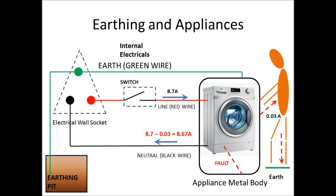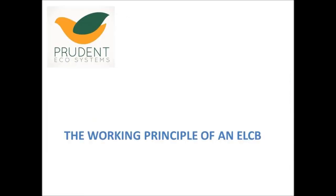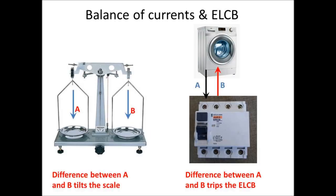The reason is that if there is a difference in current between line and neutral, then it is likely that a person is getting a shock, and hence tripping the circuit is necessary for safety. The ELCB is designed to trip at a leakage value of 30 milliamps or 0.03 amperes, because beyond this it can be dangerous for humans. It is important to note that the ELCB is not checking the absolute value of current in the line — that is 8.7 amps in this example — hence quite often even a very low power appliance having a leakage could cause an ELCB to trip the power to the entire house. The working of an ELCB is easier understood with the analogy of a precision physical balance.